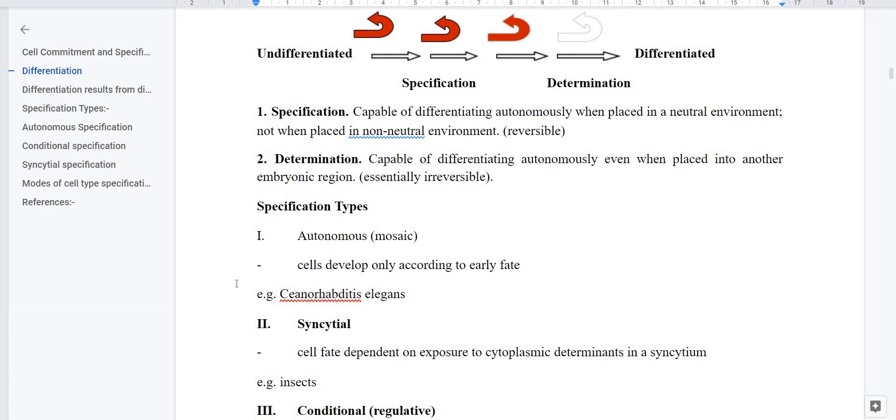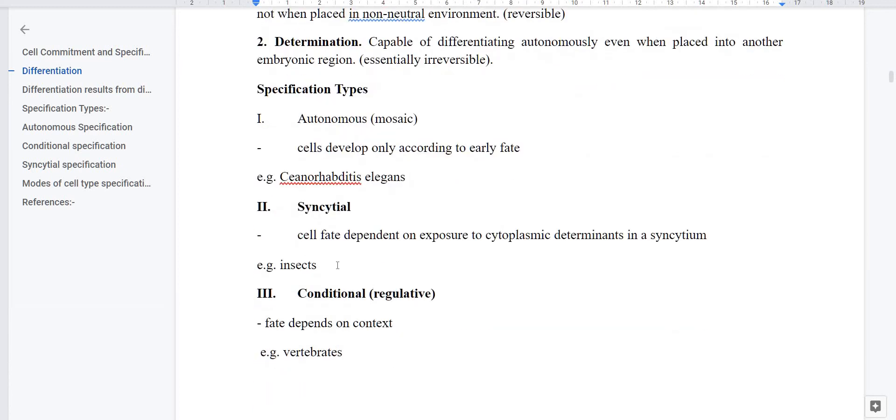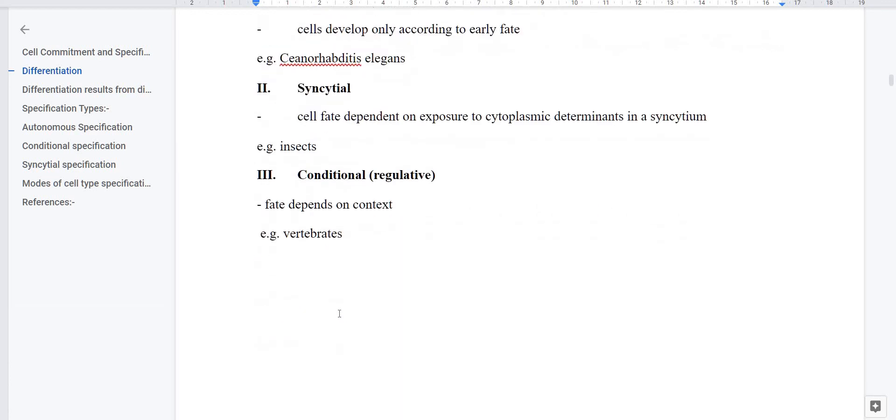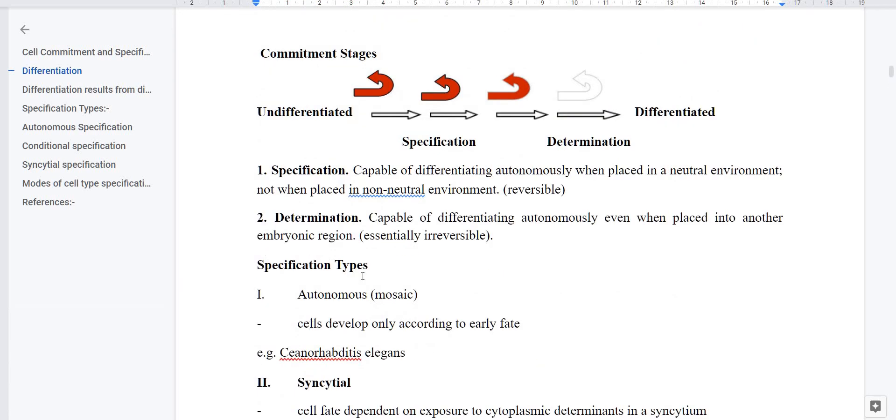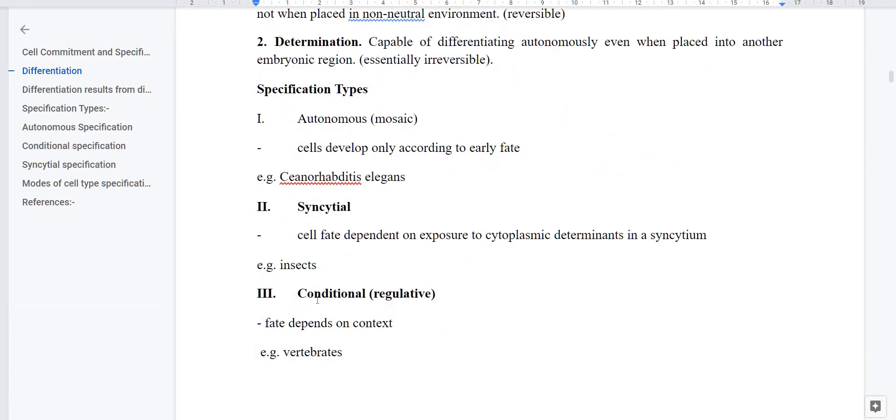Now specification, because environment is based, the cell can revert back. So specification is of three types. First is autonomous or mosaic, where cells develop only according to their earlier fate, seen in C. elegans. Second type of specification is syncytial, where cell fate depends on cytoplasmic determinants present in the cell, for example insects. And the third type of specification is conditional, which is known as regulative, seen in vertebrates, which depends on external environment.